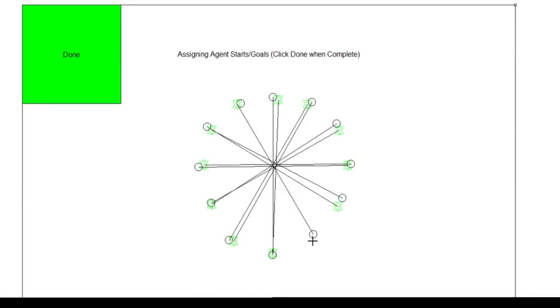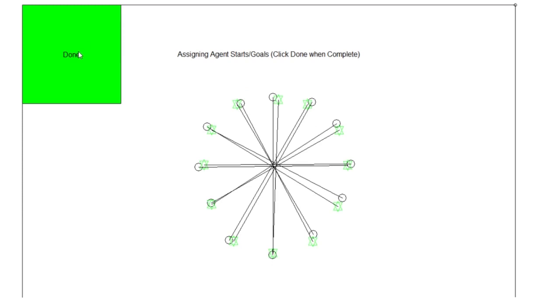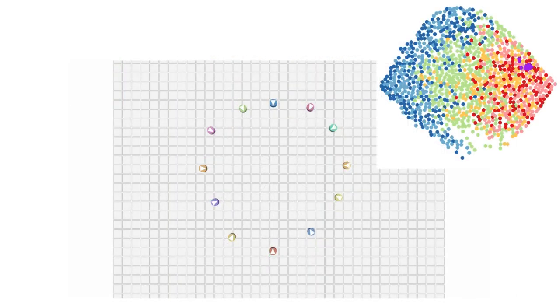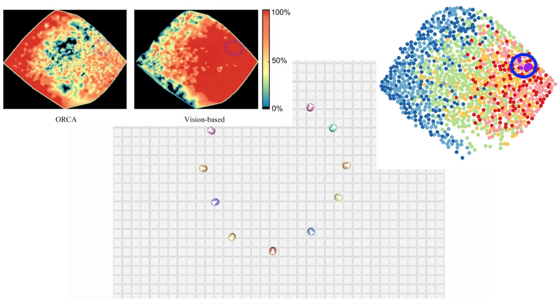By combining our CrowdSpace with localized accuracy estimates, we can predict how accurate a simulation method will be on a new scenario without ever needing to run the simulation. For example, in this user-drawn circle scenario, agents tend to lie in regions of the CrowdSpace where the vision-based model outperforms ORCA.